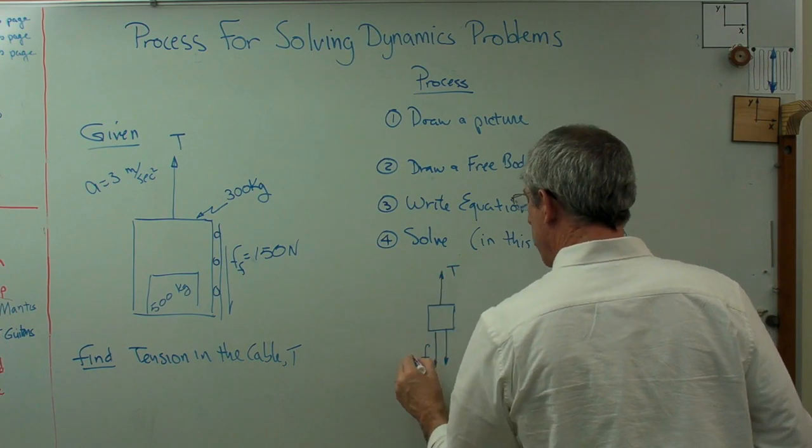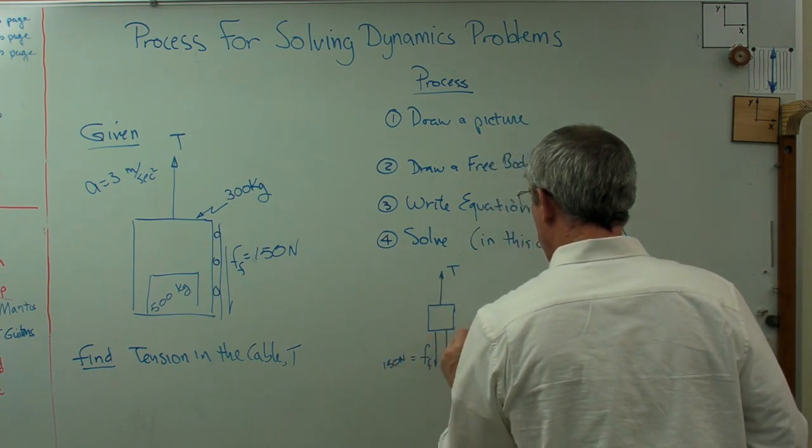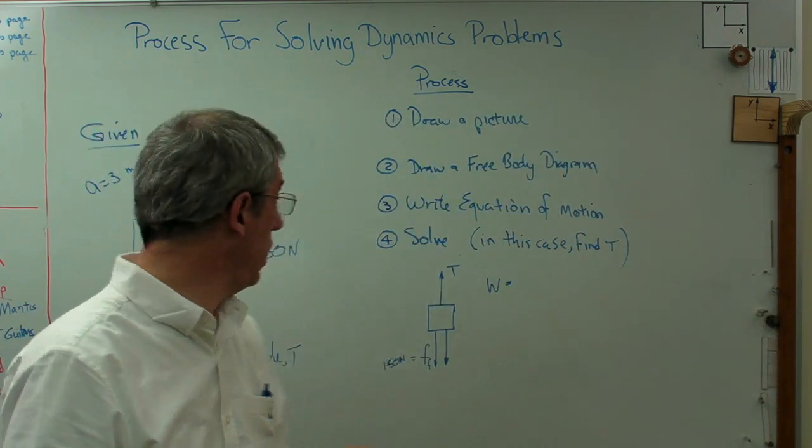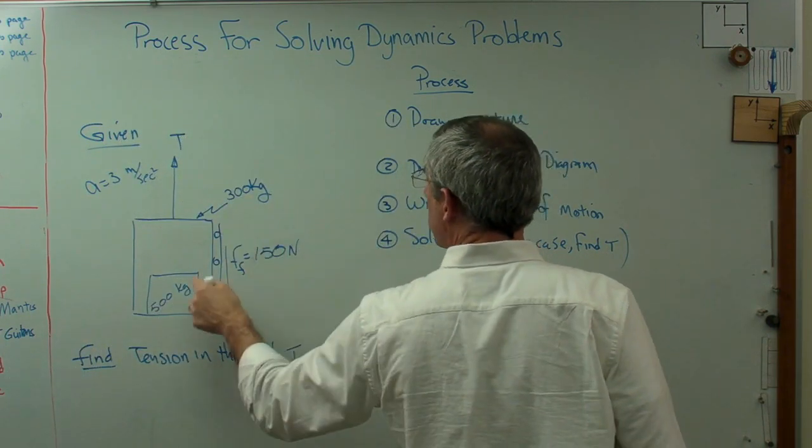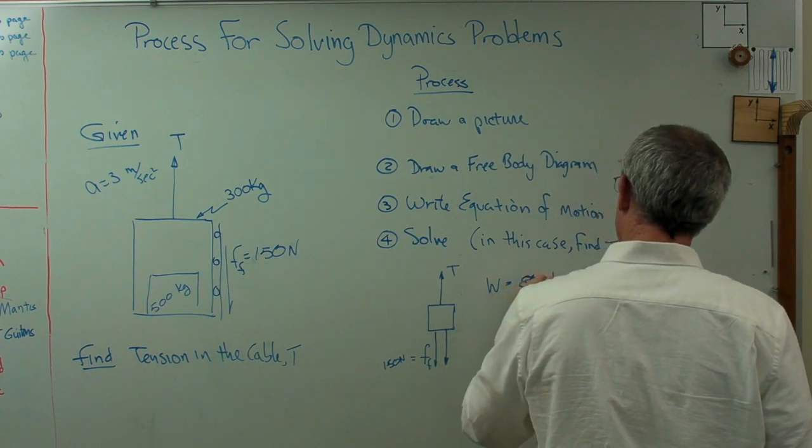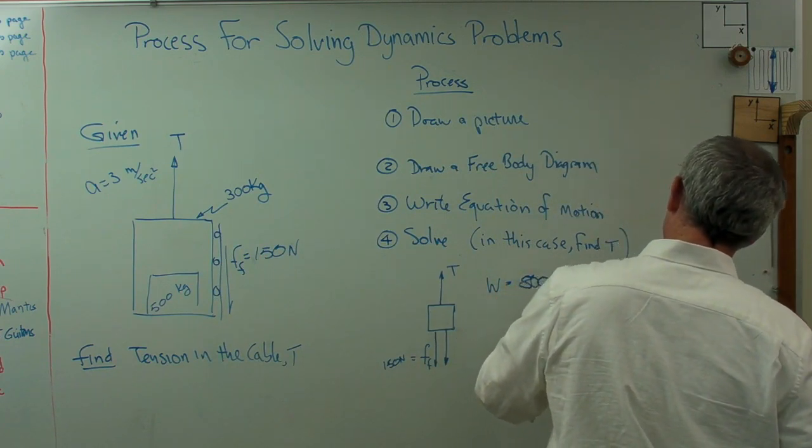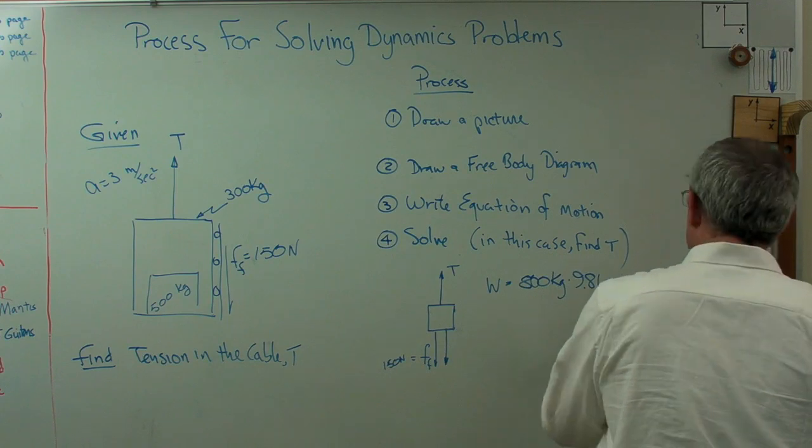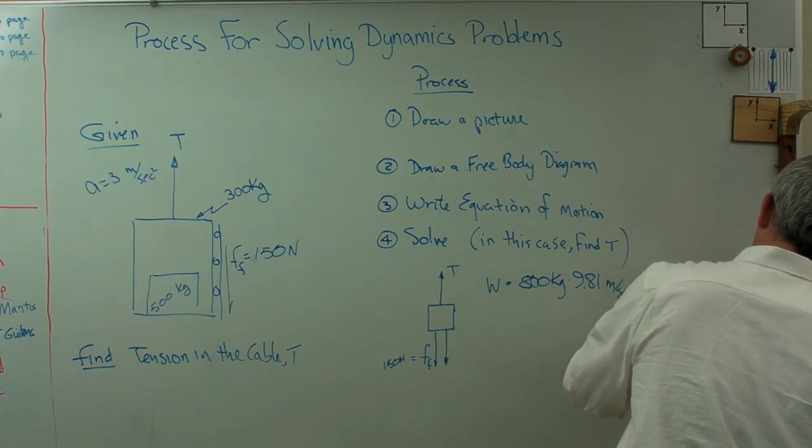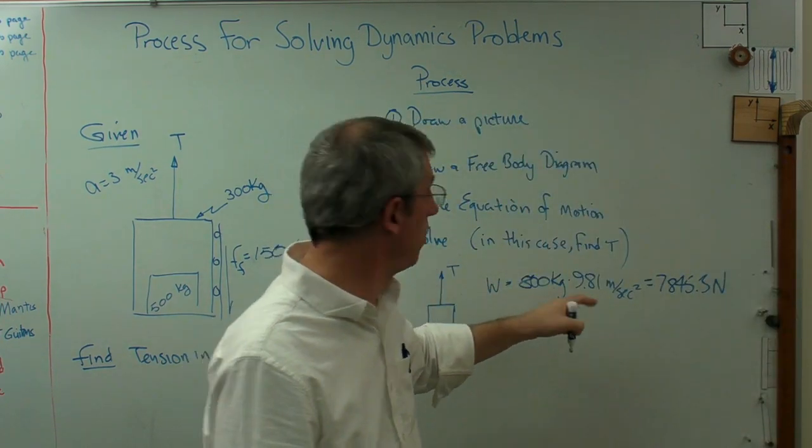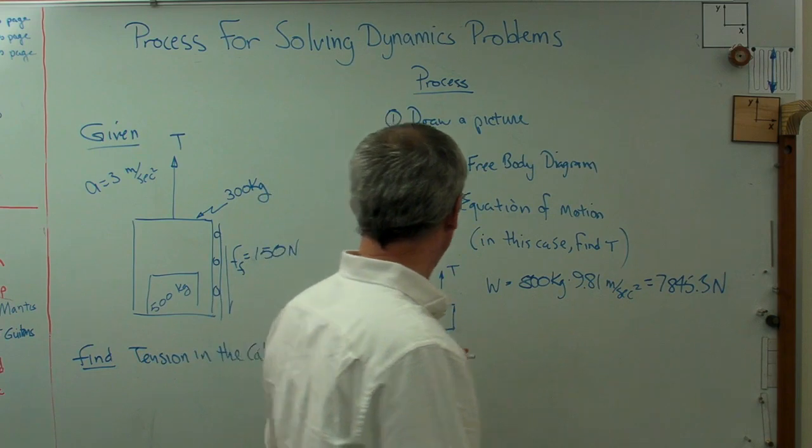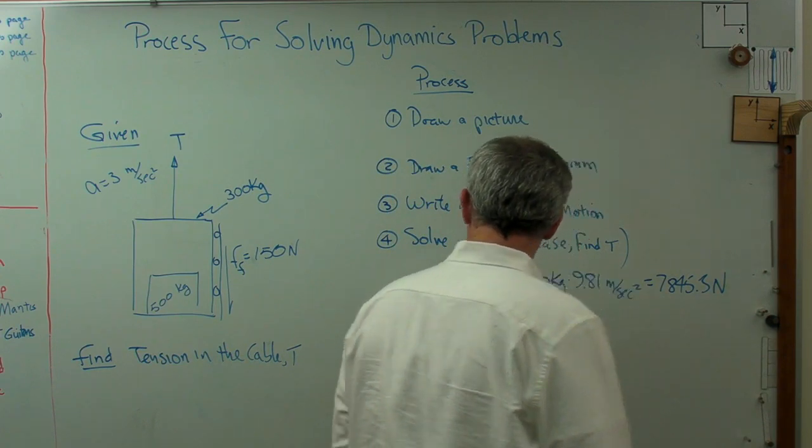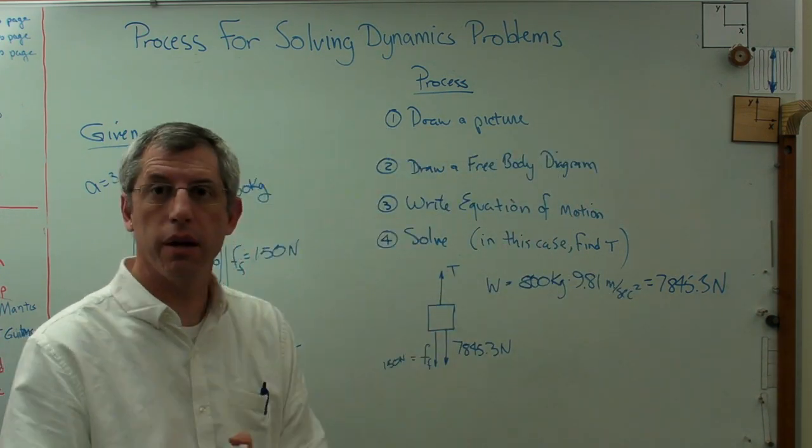Well, we don't know what that is. That one's 150 Newtons. And the weight is going to be the mass of the elevator plus the mass of the payload times the acceleration of gravity. So it's 7845.3 Newtons. So those are the forces acting on this elevator.